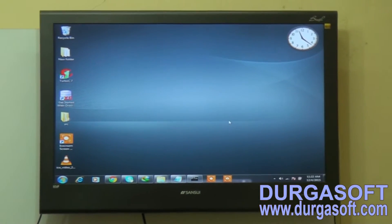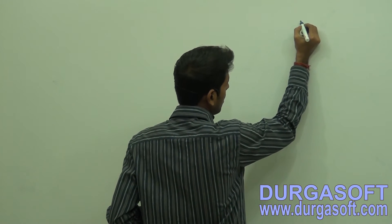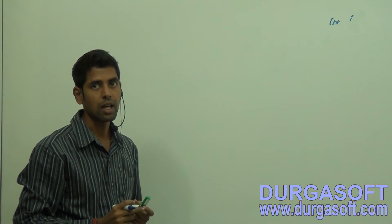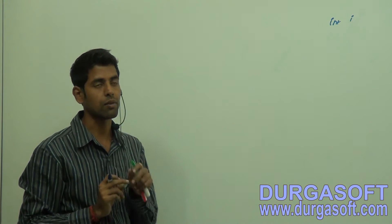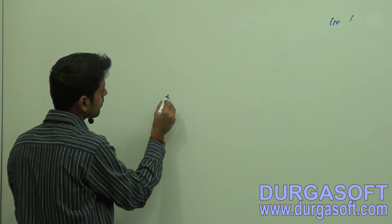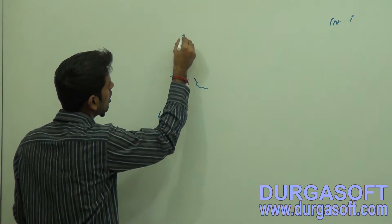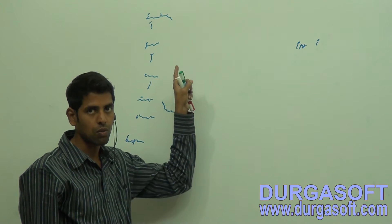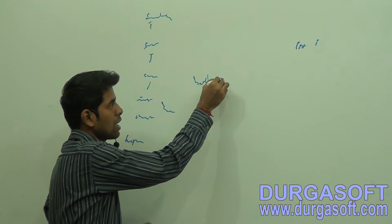Let's understand one more important concept called wrapper classes. Why do we need wrapper classes? We have primitive variables - Java has primitive data types: byte, short, int, char, long, float, double, and boolean.